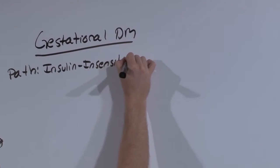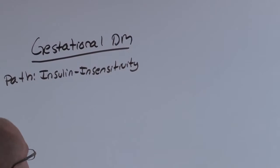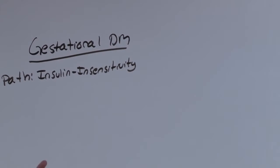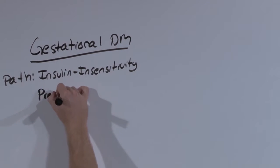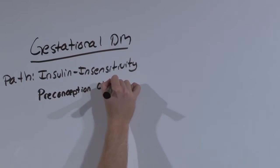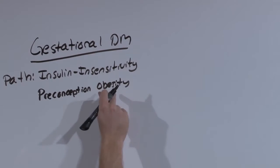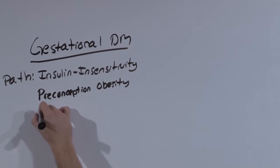The risk factors for someone who has type 2 diabetes is going to be very similar for someone with gestational diabetes. Gestational diabetes is caused or is seen in people who have preconception obesity. They were on their way to having diabetes already. Or those seen with a more than one pound per week weight gain.